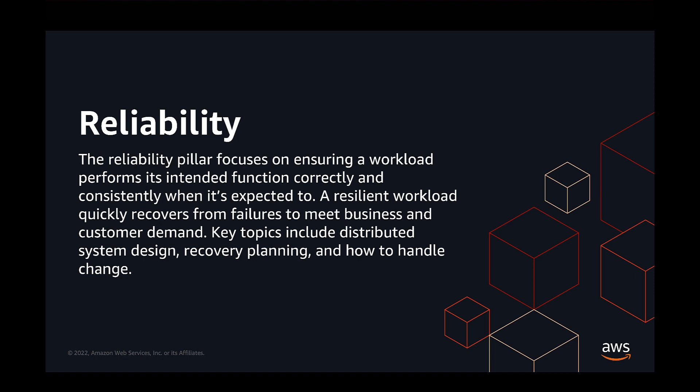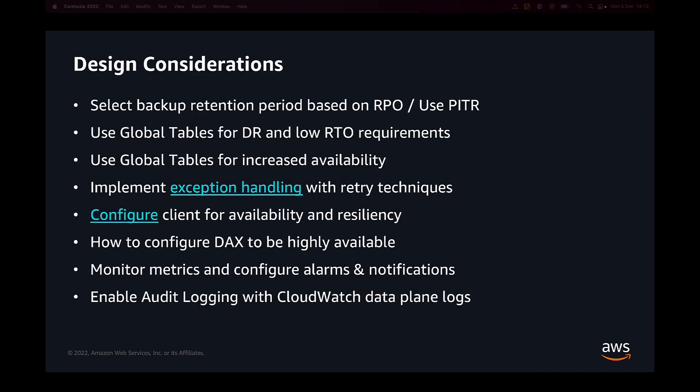Let's look at some design considerations for the Reliability Pillar of the Well-Architected Lens. We want to think about recovery point and recovery time objectives, and we will see how we can use certain DynamoDB features to help us achieve those objectives. We want to think about resiliency and how we can build highly available architectures. We want to make sure we're handling our exceptions elegantly and that we configure our SDK clients to be highly available and resilient. If you're using DynamoDB Accelerator as a caching solution, we also want to make sure it's highly available and resilient. Understanding the importance of monitoring the system and setting up alarms to notify you when a specific event occurs is paramount when architecting reliably.